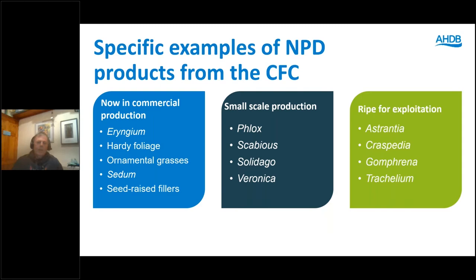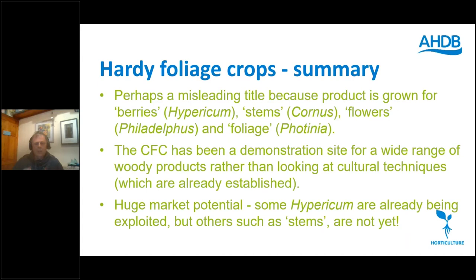The first product I'm going to cover in more detail is hardy foliage crops. This is perhaps a misleading title because product under 'hardy foliage' is grown for berries (for example Hypericum), stems (for example Cornus), flowers (Philadelphus) and foliage (Photinia). So it's quite a broad subject.